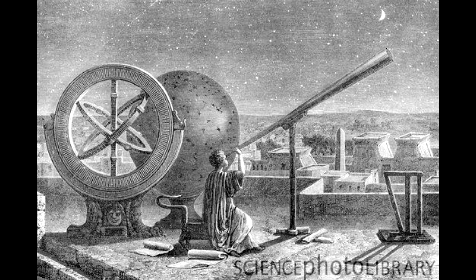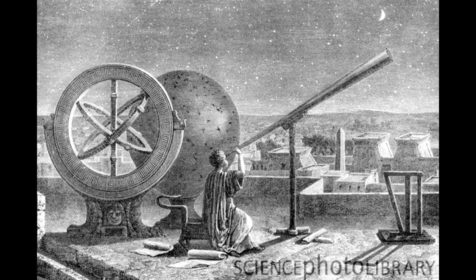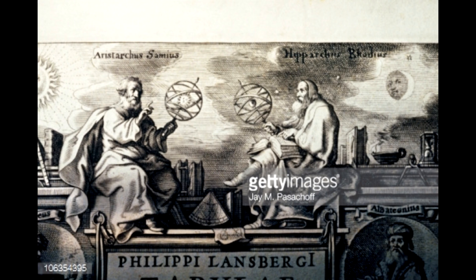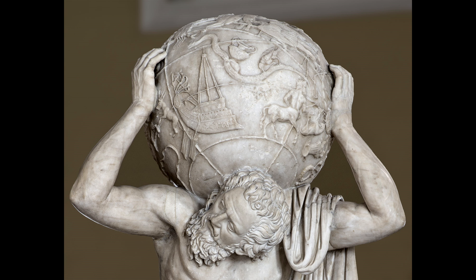His most important contribution to the field was the first known star catalogue, which historians think he was inspired to construct after viewing a supernova. This star catalogue was later used extensively by Ptolemy in his astronomical observations. His other contributions include important findings on the positions and motions of the moon and sun. Using trigonometry, a subject for which he is basically credited for inventing, he was able to measure the distance to the moon during a solar eclipse.